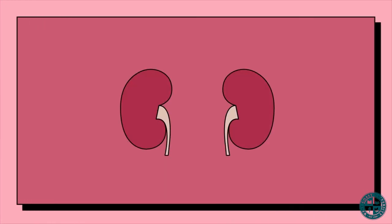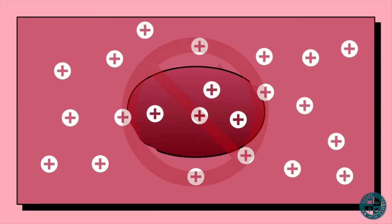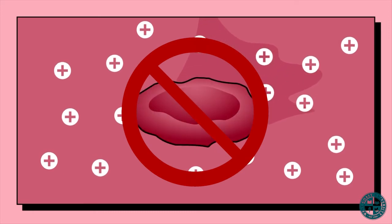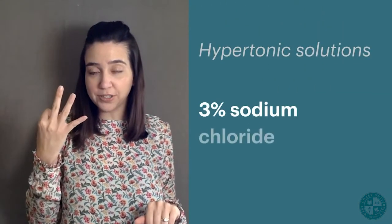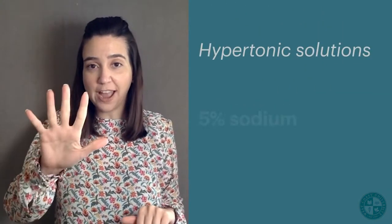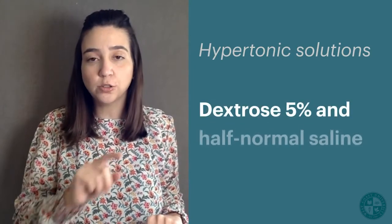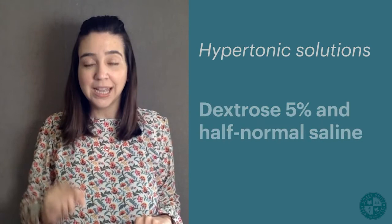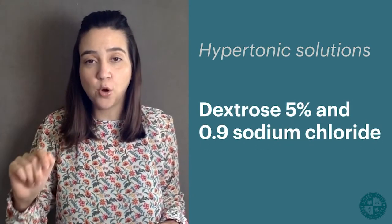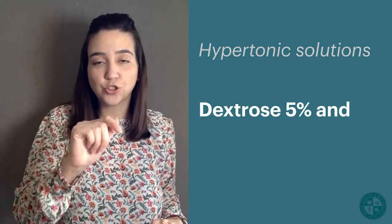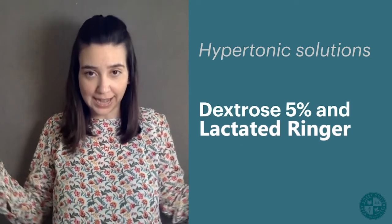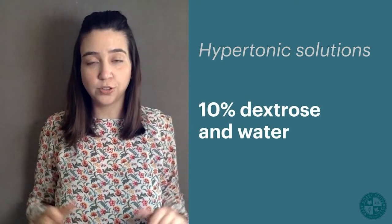Hypertonic solutions should be avoided in clients who have a renal or cardiac history, or a client who has severe intracellular dehydration like DKA. Examples of hypertonic solutions include 3% sodium chloride, 5% sodium chloride, dextrose 5% and half normal saline, dextrose 5% and 0.9% sodium chloride, dextrose 5% and lactated Ringer's, and 10% dextrose in water.